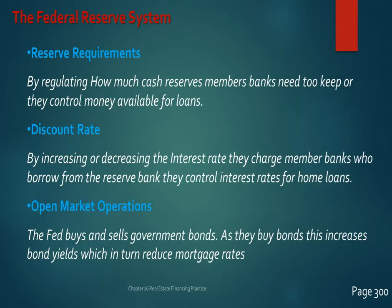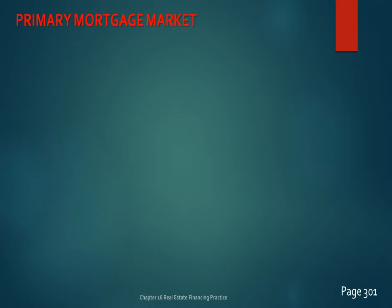When the Fed stops buying bonds, bond interest rates start to go down due to lack of demand, and mortgage rates go in the other direction — they go up. The Federal Reserve, along with the primary mortgage market and the secondary mortgage market, are the three primary players in affecting the health of our economy, money supply, interest rates, and our ability to buy and borrow.